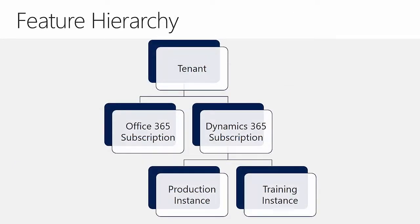Here's a diagram showing how these different entities relate to one another. At the top is the tenant, representing the account an organization has with Microsoft Online Services. Within that tenant are two subscriptions — one for Office 365 and one for Dynamics 365. Inside the Dynamics 365 subscription are two instances: one for production and one for training. Each instance can have its own security group to restrict access, and each has its own separate database.